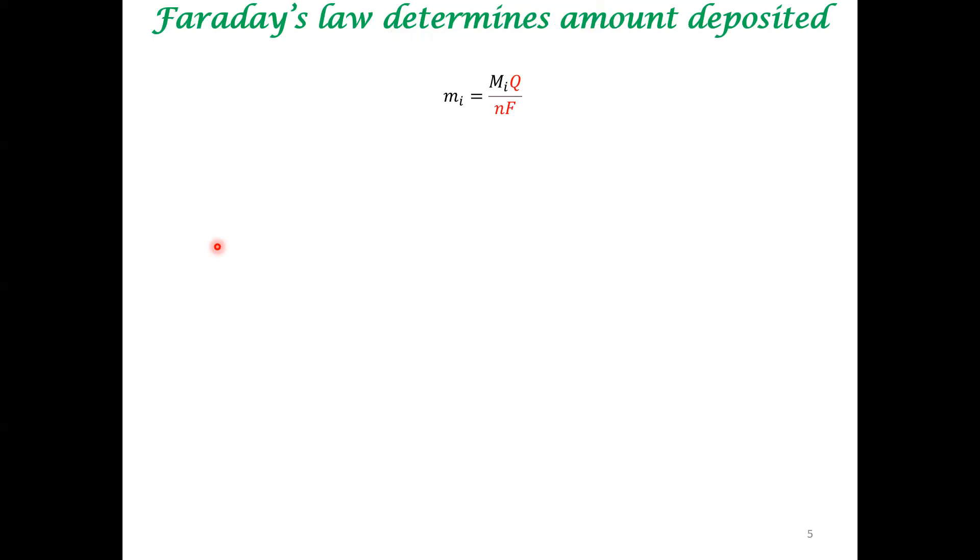The elementary quantification of this process goes via Faraday's law. Q is the amount of charge that is passed. Q by nF gives you the amount of moles of material that has been deposited. Capital M sub i is the molecular weight. This gives you the total amount of mass that has been electrodeposited.